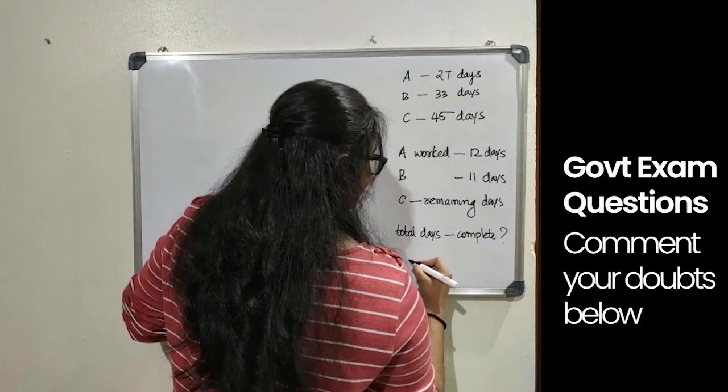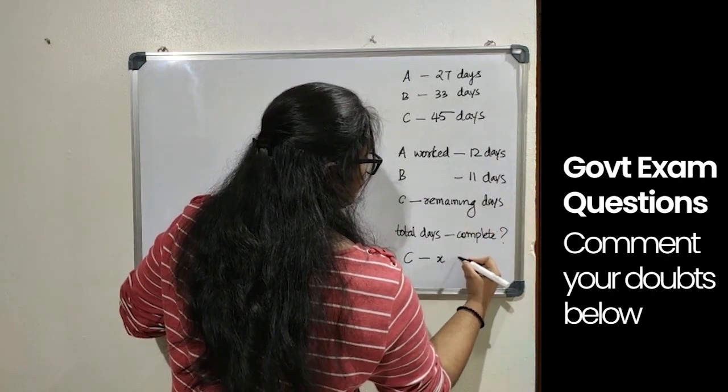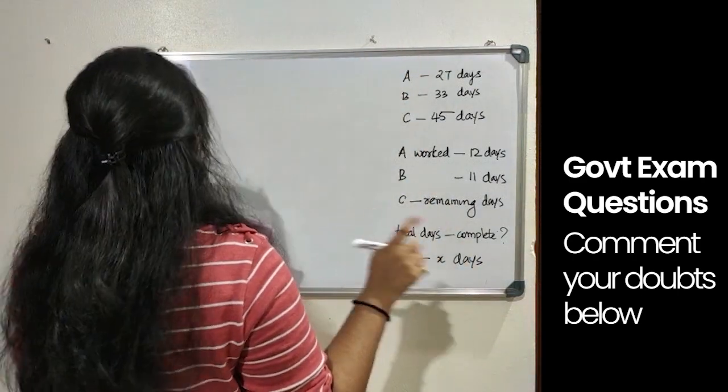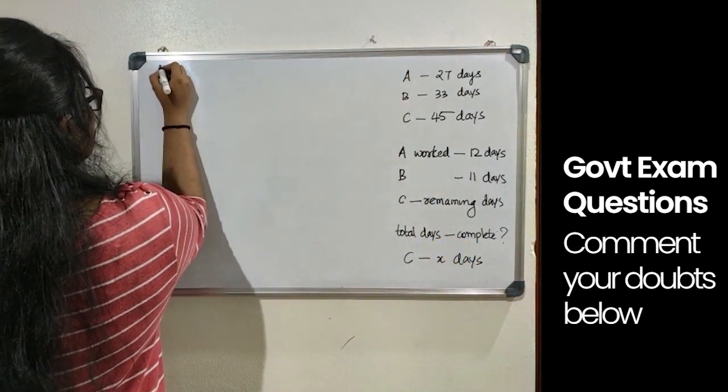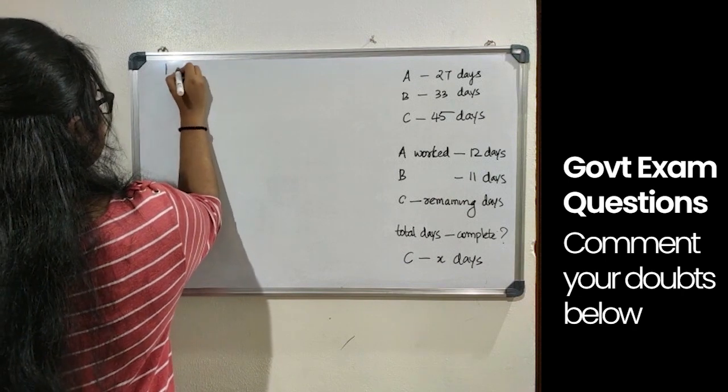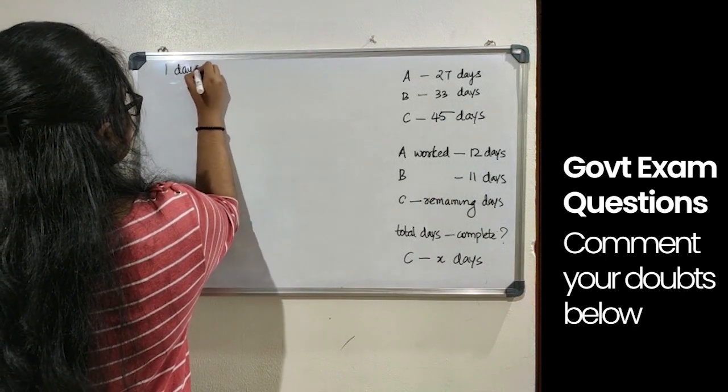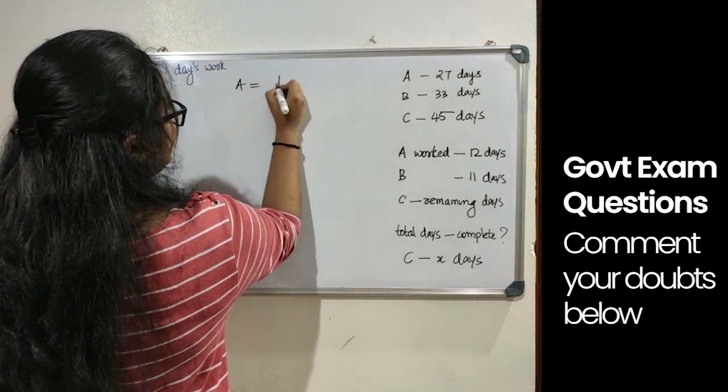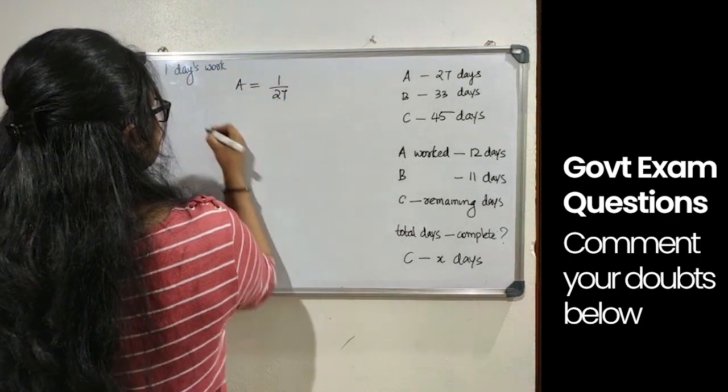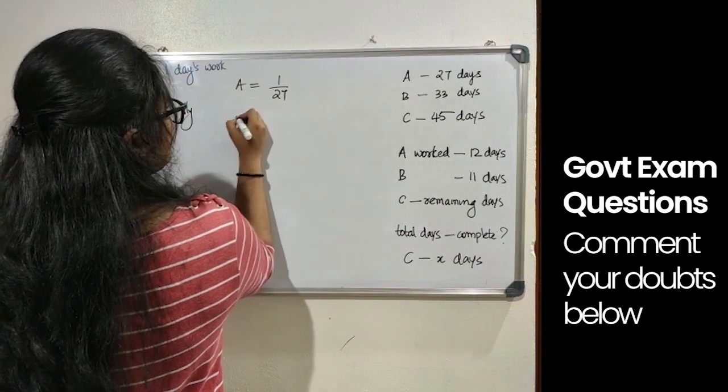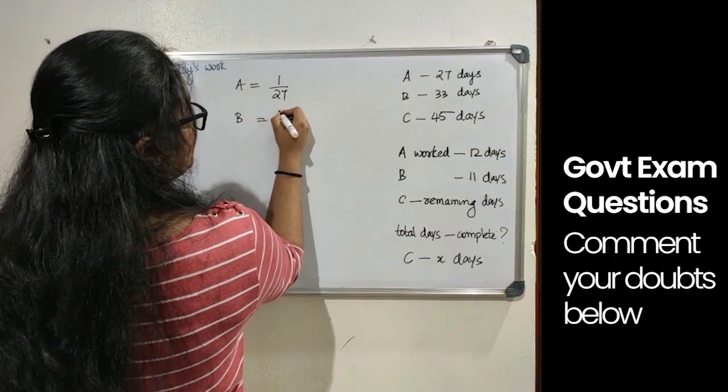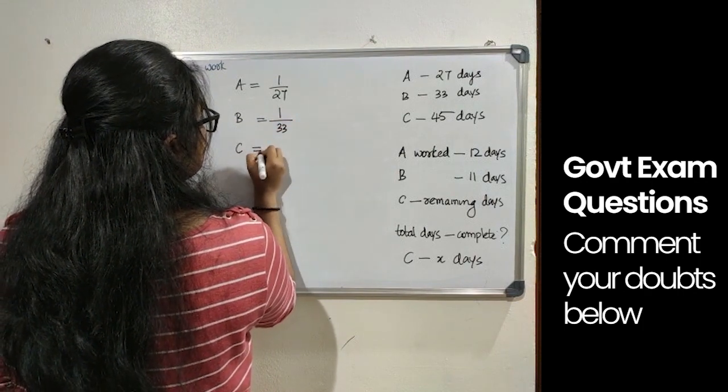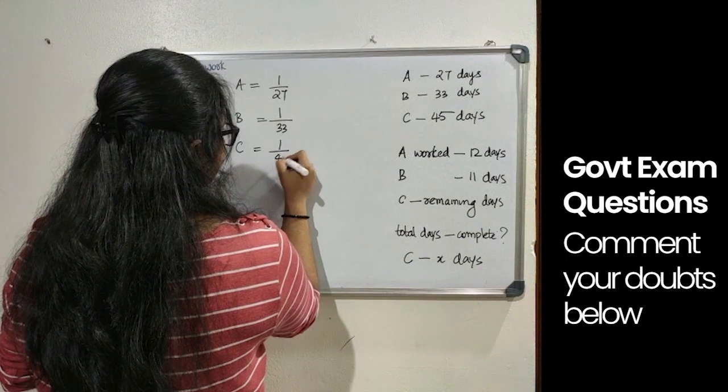C worked for remaining days. We can take C worked for X days. Here it is given that A can complete the work in 27 days. So the work done by A in 1 day equals 1 by 27. Similarly, B equals 1 by 33 and C equals 1 by 45.